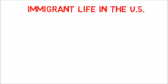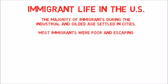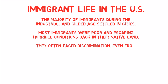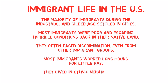Immigrant life in the U.S. The majority of immigrants during the Industrial and Gilded Age settled in cities. Most immigrants were poor and escaping horrible conditions back in their native land. They often faced discrimination even from other immigrant groups. Most worked long hours for little pay and lived in ethnic neighborhoods and crowded tenement homes.